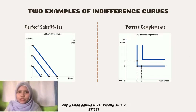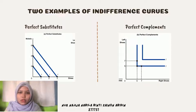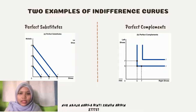Within the indifference curve framework, there are two examples: perfect substitutes, which are two goods with a straight-line indifference curve, and perfect complements, which are two goods with a right-angle indifference curve.